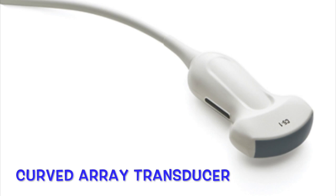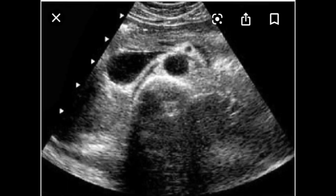Here is an image you would see using a curved array transducer, which is similar to the echo image. But if you look at the top, it has more of a curved top instead of a pointy top — that's how you can tell the difference between a curved array and a cardiac transducer image.